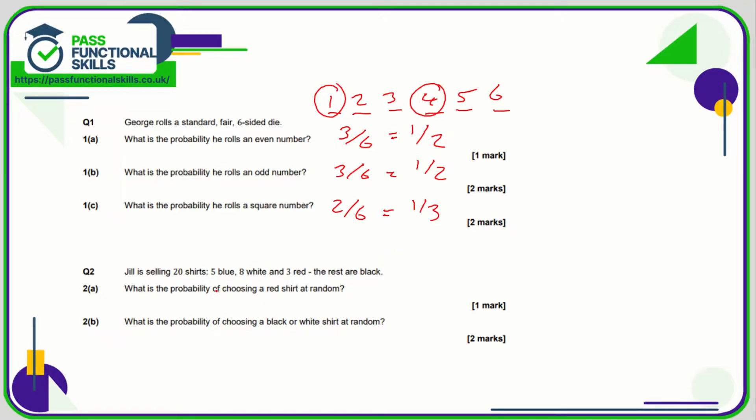Question number two: Jill's selling 20 shirts, five blue, eight white, three red, the rest are black. What's the probability of choosing a red shirt at random? Well, out of the 20, three are red, so that's simply three out of 20.